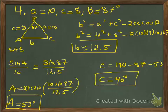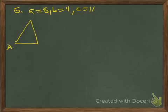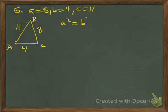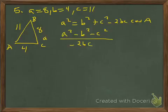One more example: what happens when I know all three sides? Side a is 8, side b is 4, and side c is 11. Since I don't know any angles, I'll start with angle A. A² equals B² plus C² minus 2BC cosine of A. Rearranging: subtract b² and c² from both sides, divide by negative 2bc, leaving cosine of A. Taking the arc cosine: A equals arc cosine of (8² minus 4² minus 11²) divided by (negative 2 times 4 times 11), which gives angle A approximately 34 degrees.